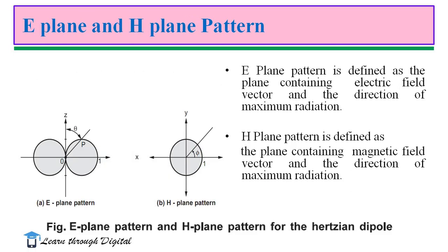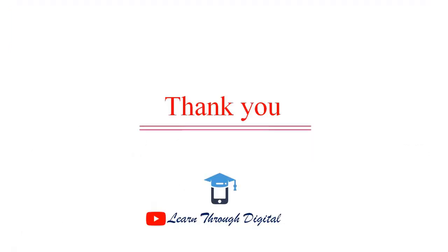Another type of pattern is E-plane and H-plane patterns. Generally, for any antenna, we plot both E-plane and H-plane patterns. The E-plane pattern is defined as the plane containing the electric field vector in the direction of maximum radiation. The H-plane pattern is defined as the plane containing the magnetic field vector and the direction of maximum radiation. This figure illustrates the E-plane and H-plane patterns for the HCM dipole. The E-plane pattern consists of two major lobes in two opposite directions, and this is the H-plane pattern. I hope you understand the concept very clearly. Thank you.